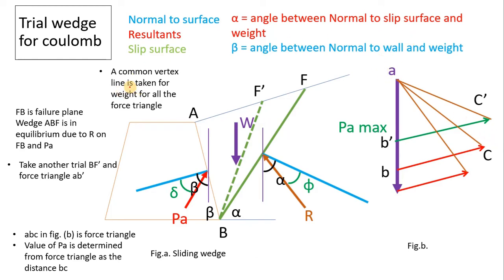A common vertex line is taken for weight for all the force triangles here. As the weight reduces, the value reduces. As the weight increases, the value increases of the sliding wedge.